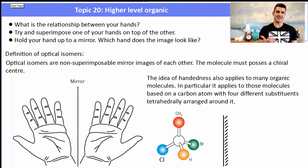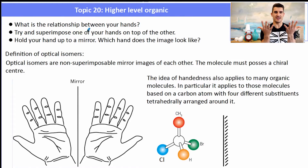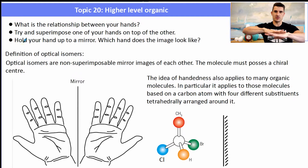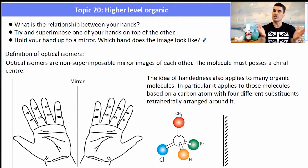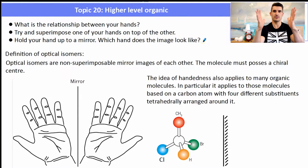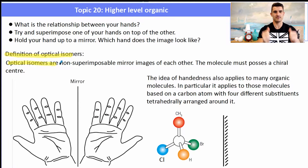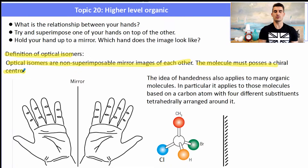So what is an enantiomer? Well, what is the relationship between your hands? Try and superimpose one hand on top of the other — you really can't do it. No matter which way you try, you can't superimpose them. But if you hold one hand up to a mirror, it looks exactly like your right hand. This is known as an optical isomer — a non-superimposable mirror image — and for that to occur, a molecule must have what we call a chiral center.